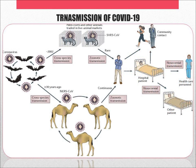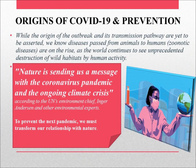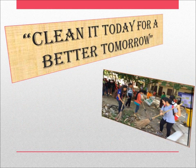You can have a look at the transmission of COVID-19. Regarding the origin of COVID-19 and prevention: the origin of the outbreak and its transmission pathway are yet to be ascertained. We know diseases passed from animals to humans — zoonotic diseases — are on the rise as the world continues to see unprecedented destruction of wild habitat by human activity. Nature is sending us a message with the coronavirus pandemic and the ongoing climate crisis. To prevent the next pandemic, we must transform our relationship with nature. Stay safe, stay home.